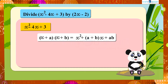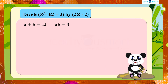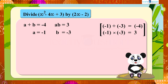We can write a + b = −4 and ab = 3. Solving, we get a = −1 and b = −3.